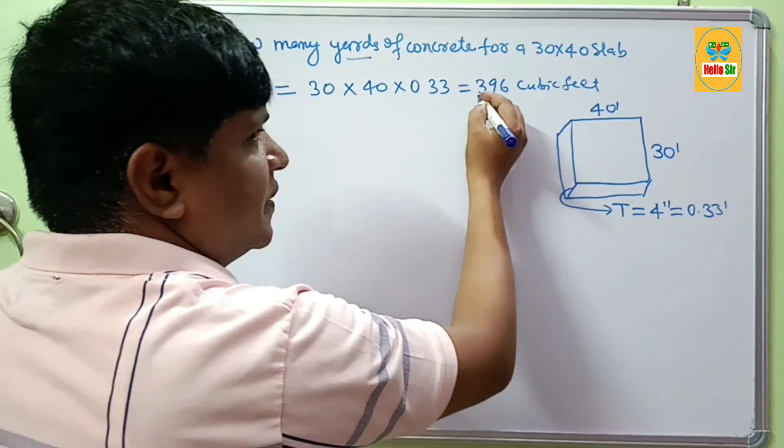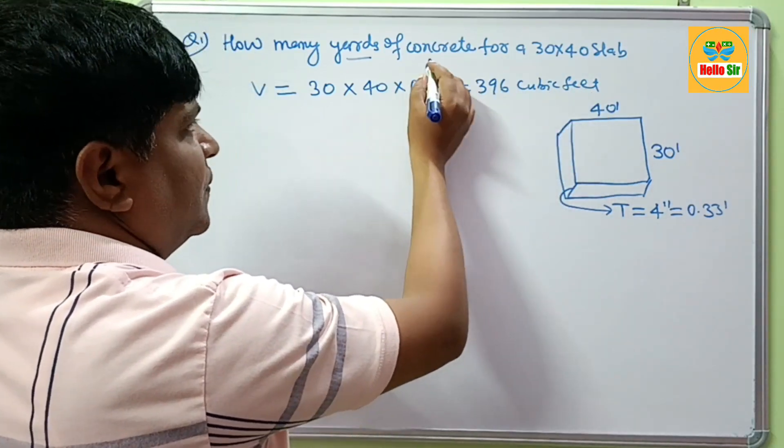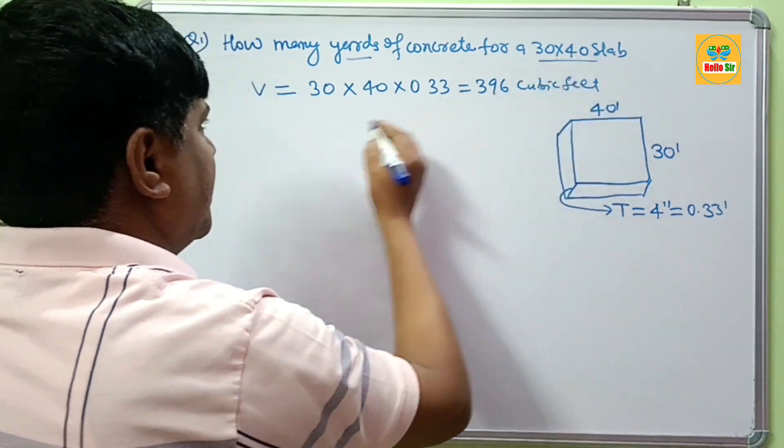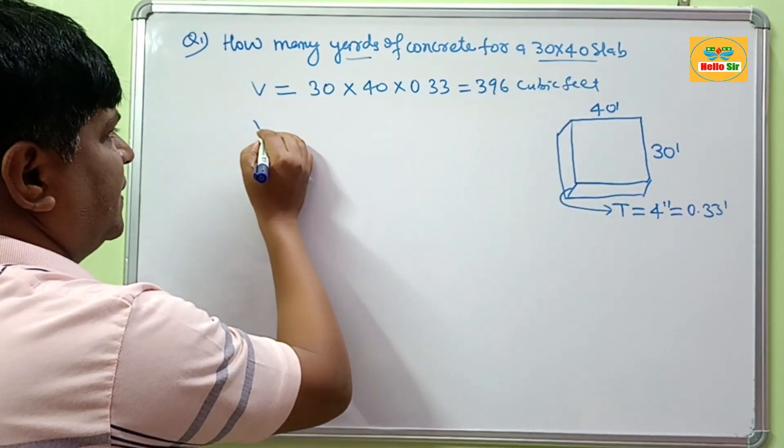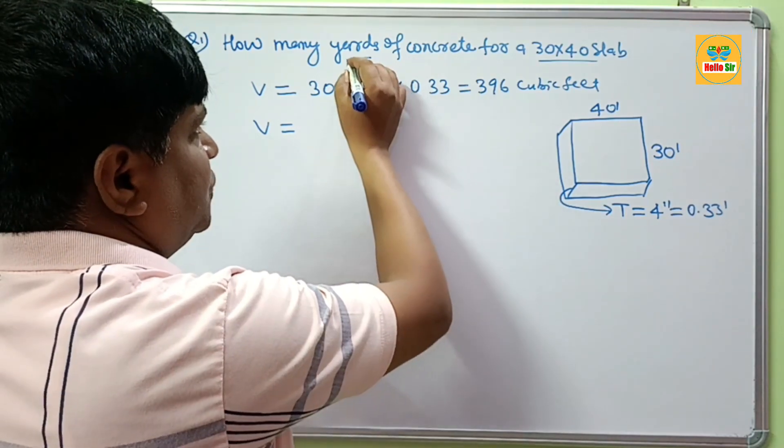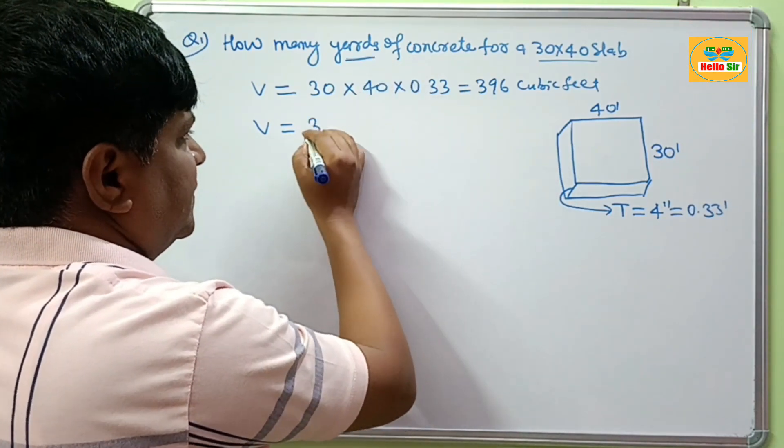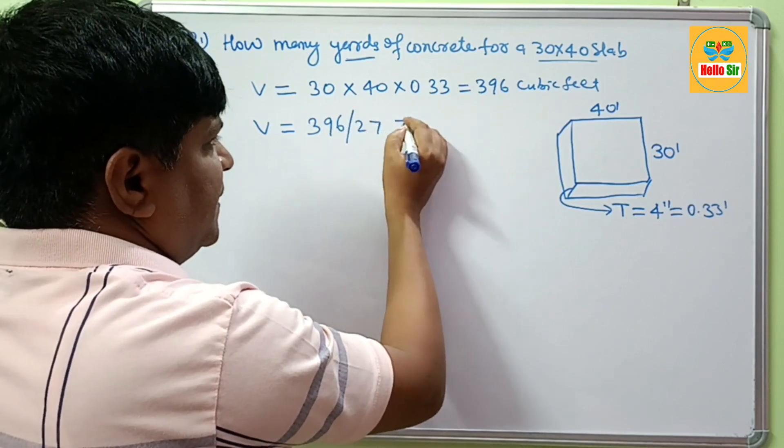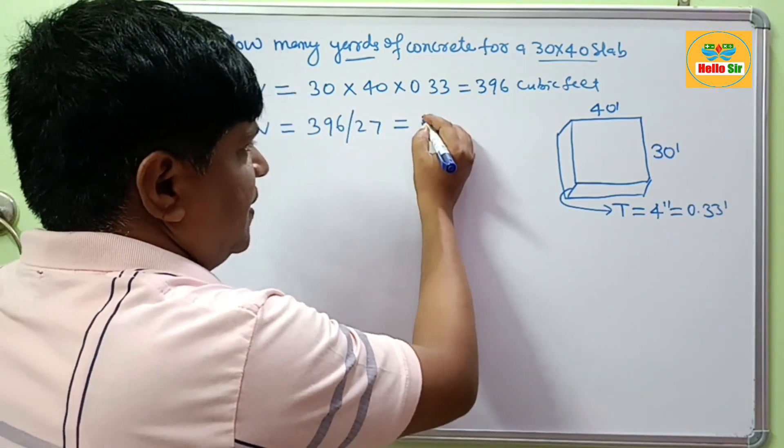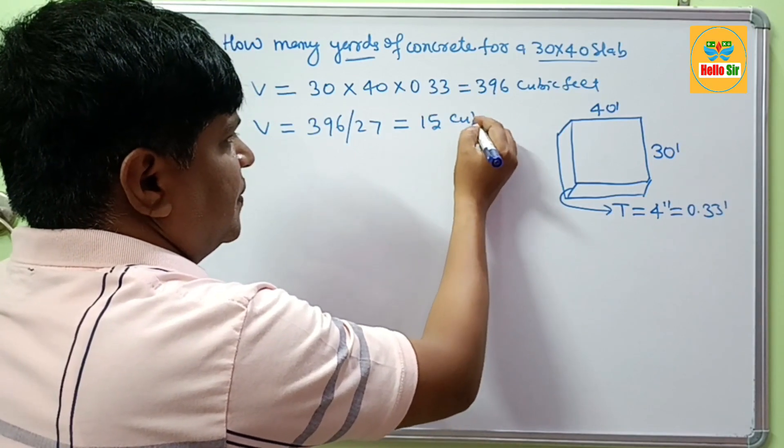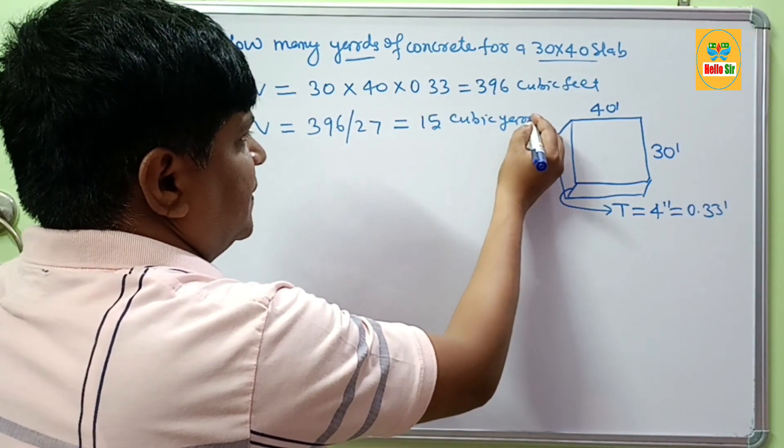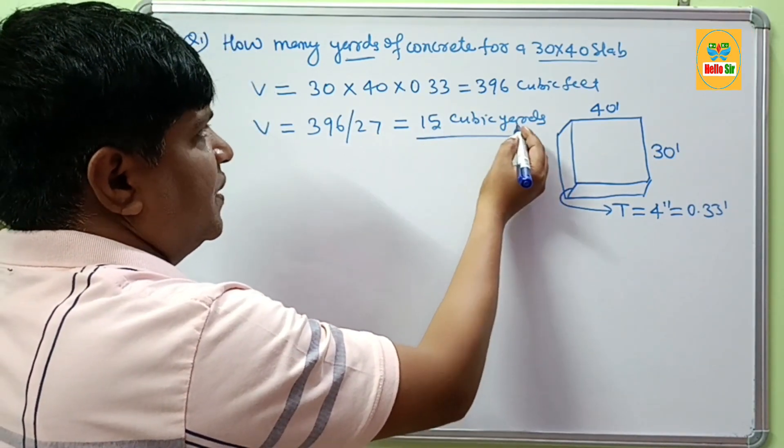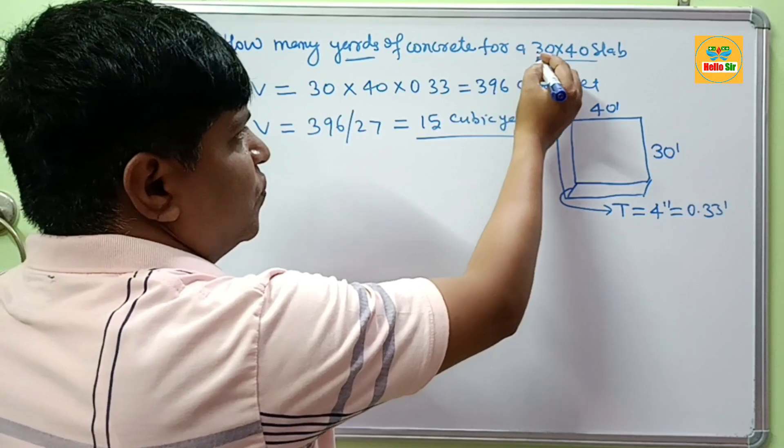This means 396 cubic feet of concrete is needed for a 30 by 40 slab. If your concrete quantity is measured in cubic yards, then 396 divided by 27 equals approximately 15 cubic yards.